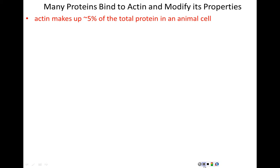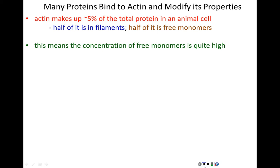Half of that 5% is polymerized into filaments; half of it is still free monomers. That's a lot of free monomers, meaning the concentration of free, non-polymerized actin monomers is pretty high — a 50-50 split. Most of the tubulin we find in a cell is incorporated into microtubules with very little free monomer. This is quite different with respect to actin, and it is intentional.